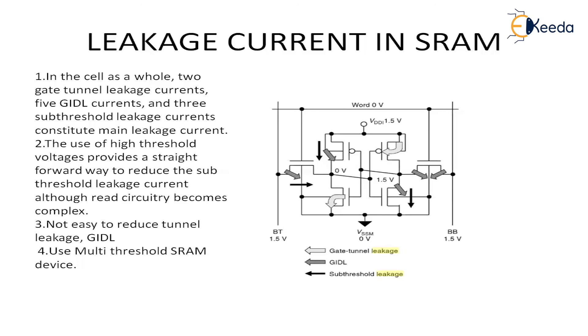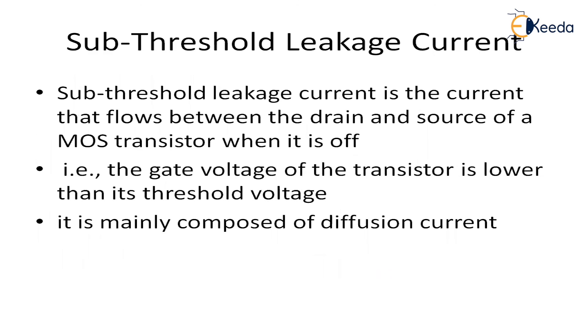Another way to reduce leakage current in your SRAM is to use multiple threshold voltage MOSFET devices — for all MOSFET devices I can assign different threshold voltages. This is a way through which I can reduce the leakage current in my SRAM, because the most dominant factor contributing to leakage current is sub-threshold leakage: the current passing between drain and source even when my MOS transistor is off. To avoid that, I can use multiple threshold voltage MOSFET devices. This is all about leakage current in SRAM. In the next video we shall see about the read and write circuits of your SRAM. Thank you.